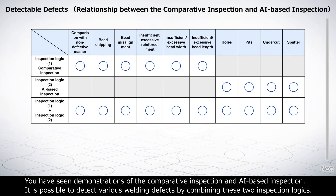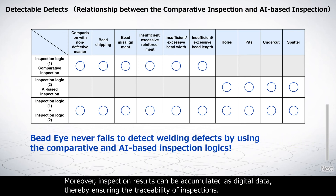You have seen demonstrations of the comparative inspection and AI-based inspection. It is possible to detect various welding defects by combining these two inspection logics. Moreover, inspection results can be accumulated as digital data, thereby ensuring the traceability of inspections.